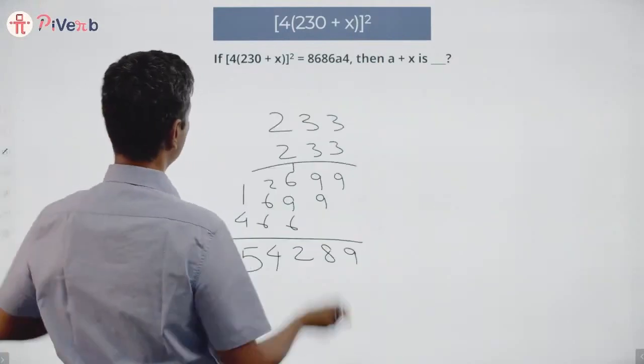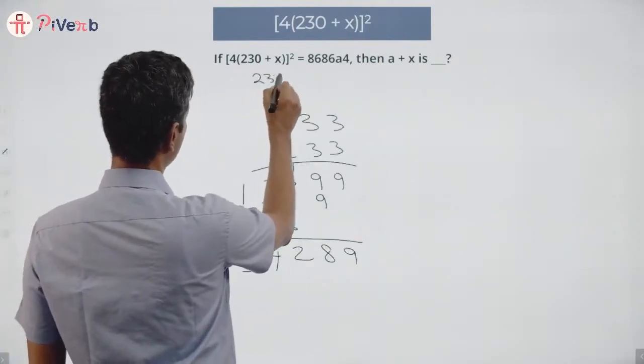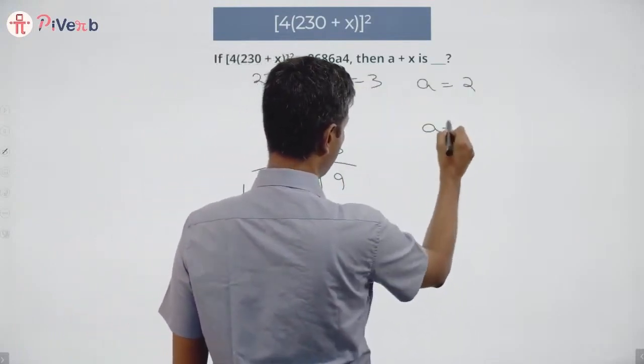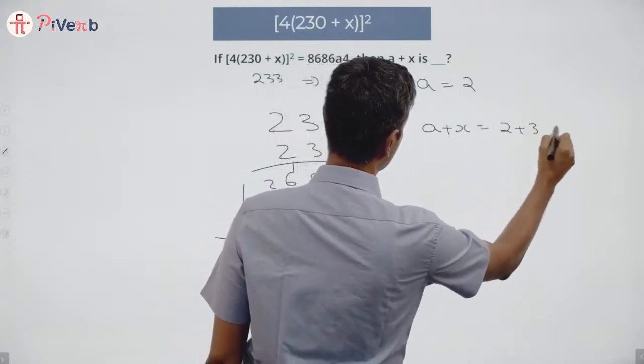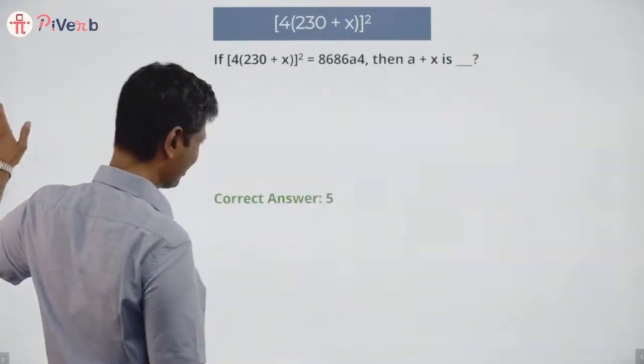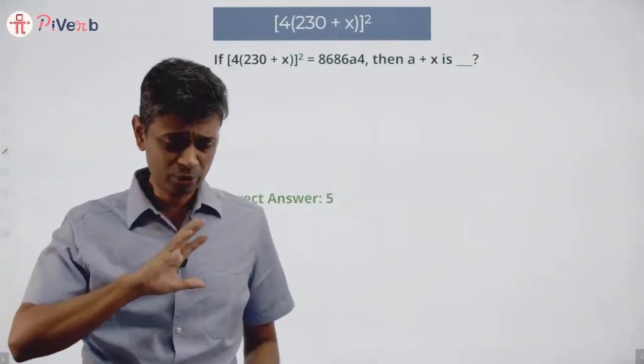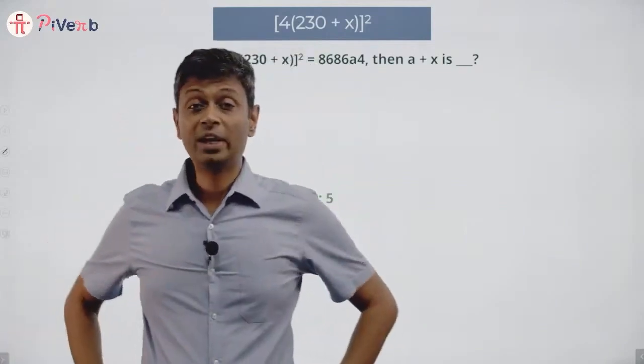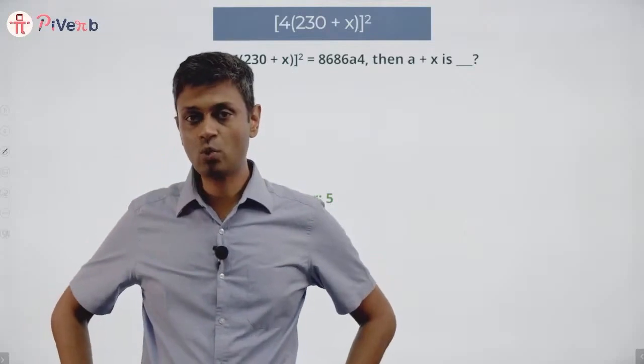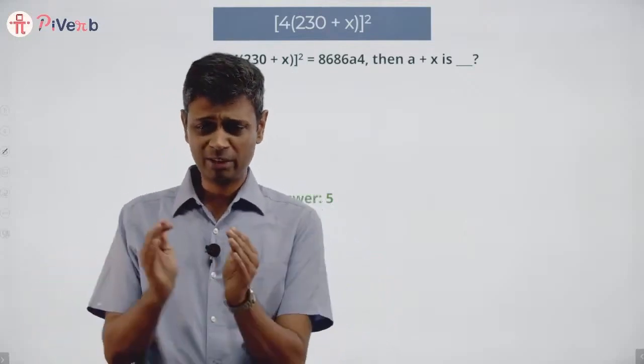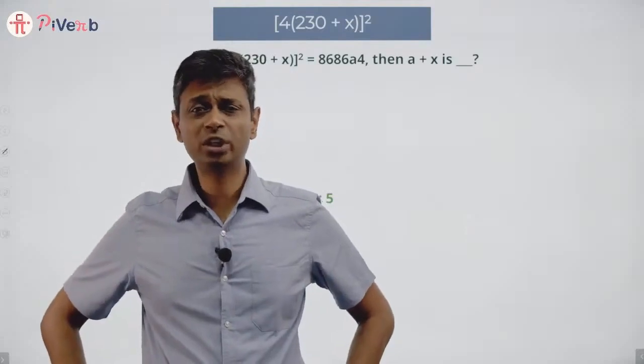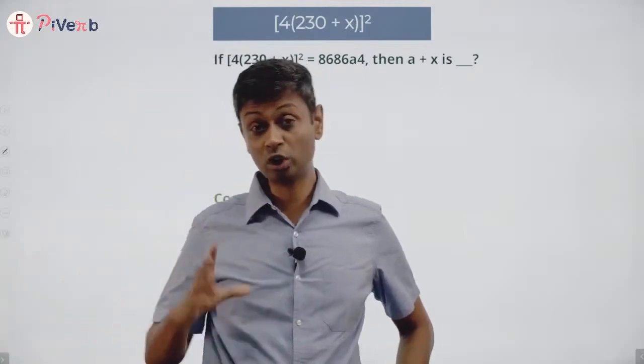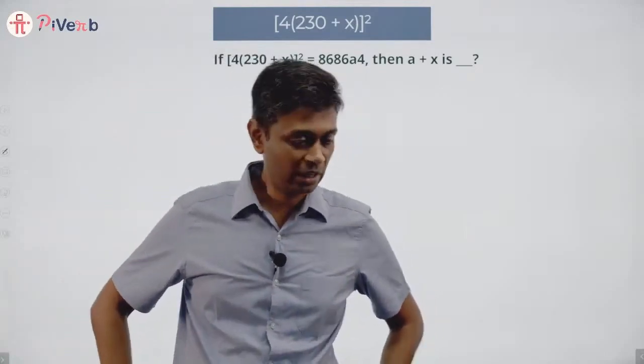So this number should be 233, or x is 3. We already found a is 2. a + x is 2 + 3 which is 5. Once again, a very tough question because step by step we say this number should be a multiple of 16, so we get to find what a is. We locate a to be 2. Now with a as 2, remove that 16 from it. The remaining square works, it should be between 230 and 240. 233 works, nice.